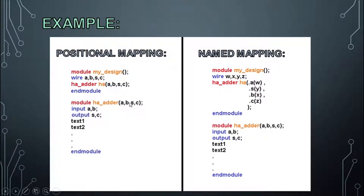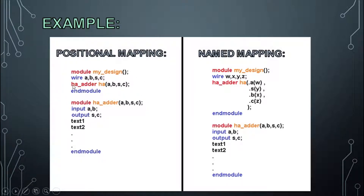Since A, B, S, C are the ports of this module, we declare them in order. In positional mapping, order is everything: A must connect to A, B must connect to B, S must connect to S. A and B must be inputs, and S and C must be outputs. This is how positional mapping is done.